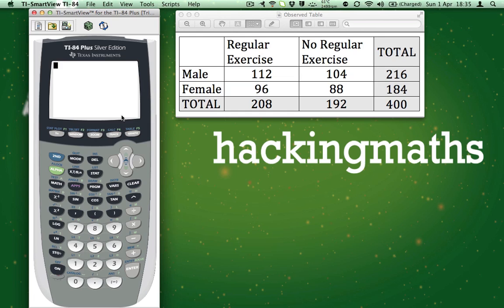On the right-hand side, you can see the observed contingency table. To calculate the chi-squared value, we need to enter this table into the calculator. So let's begin. We start by pressing 2nd, and then x to the minus 1. This takes you to the matrix menu.